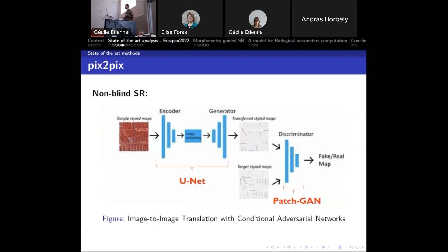Finally, we have Pix2Pix, which is a generative adversarial network. It has two parts: a generator that aims to generate higher resolution images, and a discriminator that tries to distinguish between fake generated images and real high resolution images. Both are trained together — the generator tries to fool the discriminator, and the discriminator improves at distinguishing fake from real — so images become more and more realistic. The particularity of Pix2Pix is that the generator is a U-Net, meaning it has an encoder and a decoder.